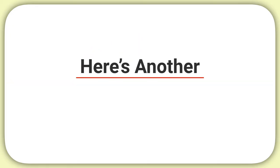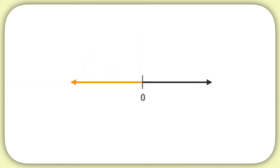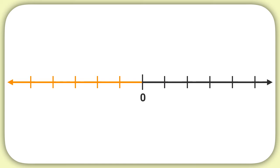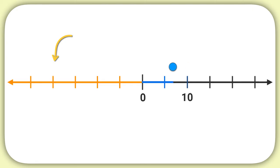Here's another problem to practice with. Here's a number line, and I'm going to tell you that this second dash represents 10. And we want to figure what number this dash represents. Well, let's think about this. When I move two dashes forward, I'm going a distance of 10. So how far is it if I move one dash? Well, if I'm only moving one dash, that would mean I'm only moving 5. So now, if I move backwards one dash, I would be at negative 5.